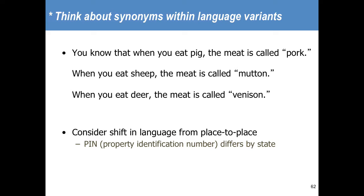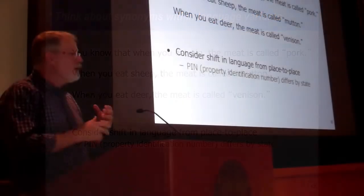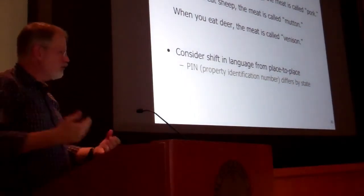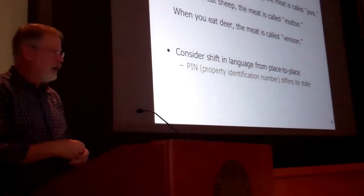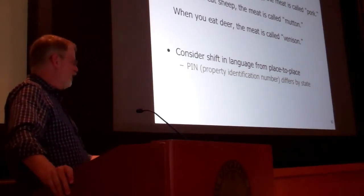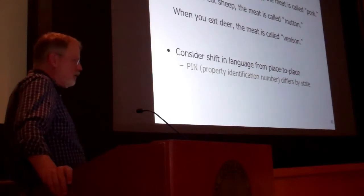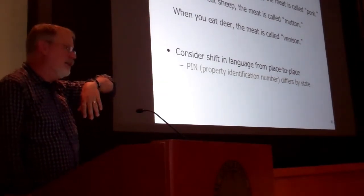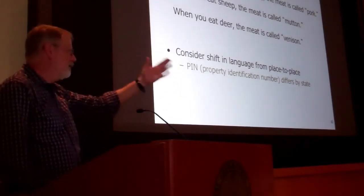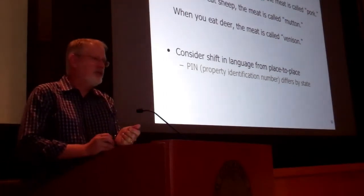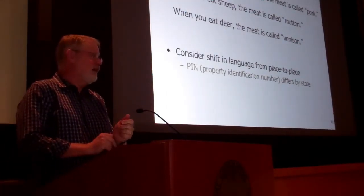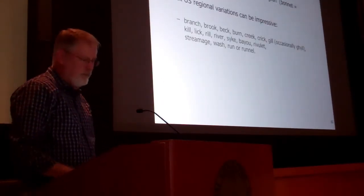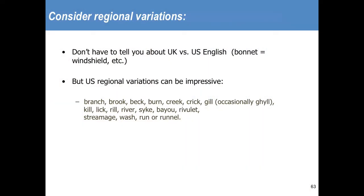Remember that language is interesting and subtle. In English we have terms like: if we're going to eat pig, we don't ask for pig recipes — we search for pork recipes, pork shoulder. If I'm going to eat a sheep, it's mutton or lamb, not 'sheep recipes.' And if I want Bambi for dinner, I ask for venison, not deer. This is true across nationalities too — windscreen is windshield in the United States, the boot is the trunk. Even property identification numbers vary state to state. The difference between a brook, a branch, a creek, and a gill — when I'm searching for what I'd call a creek in Maryland, they also call them runs.